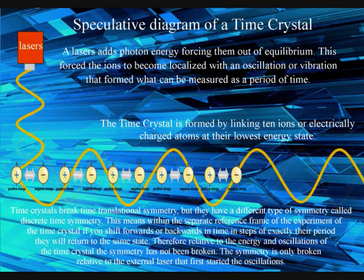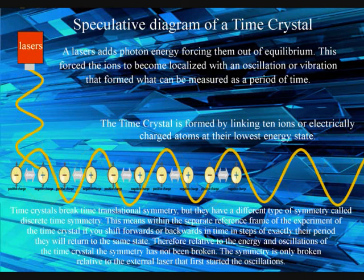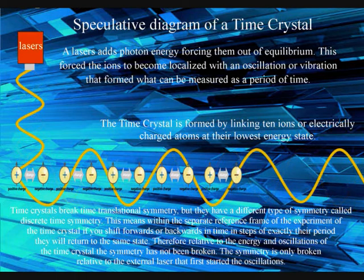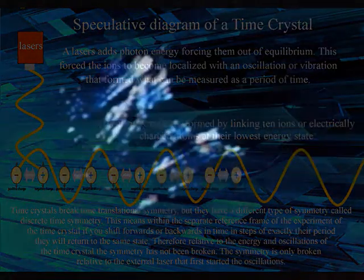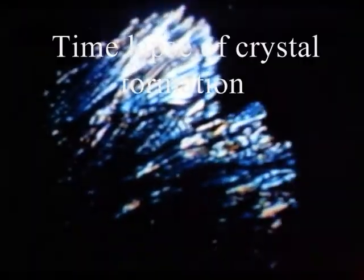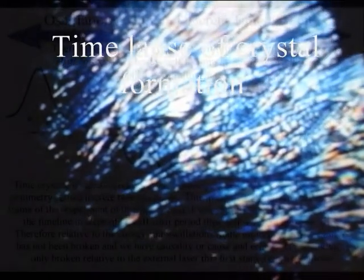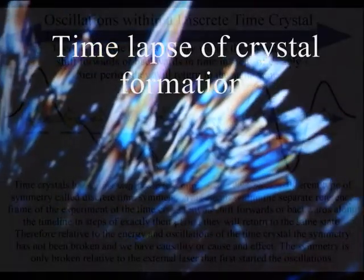Researchers then noticed something very odd, and that was the system or time crystal was oscillating or vibrating with a repetition twice the period of the original laser that had started the oscillation. This could not occur in a normal system or crystal, where the future is always based on the past.